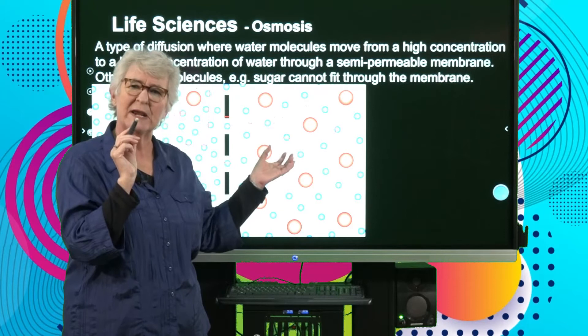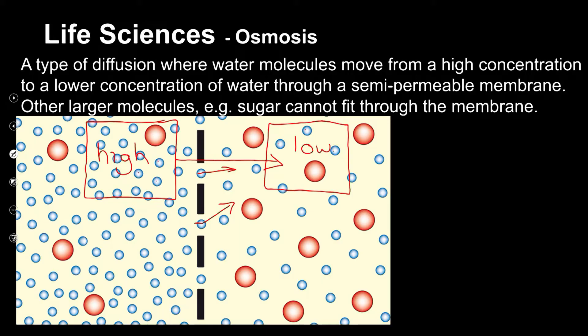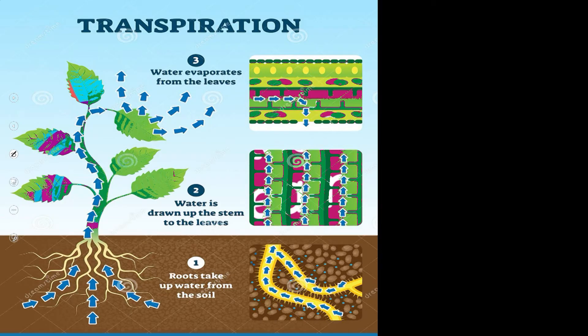You might ask: what about the larger red particles? Why don't they move from high to low concentration? Looking at the size — those represent, for example, sugar molecules — they cannot fit through the spaces in the membrane. So large molecules can't fit through, but smaller molecules can, and that's why we call it a semi-permeable or selectively permeable membrane.